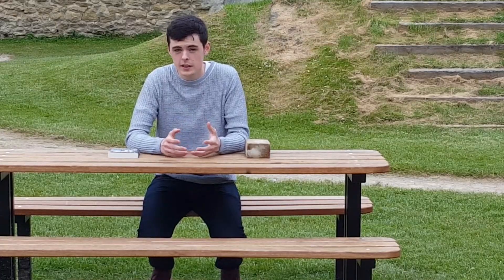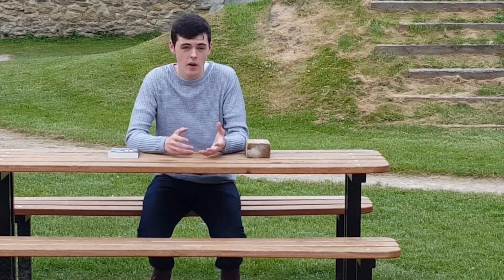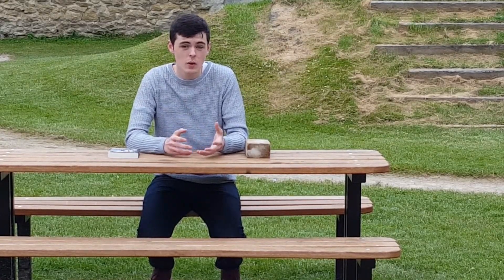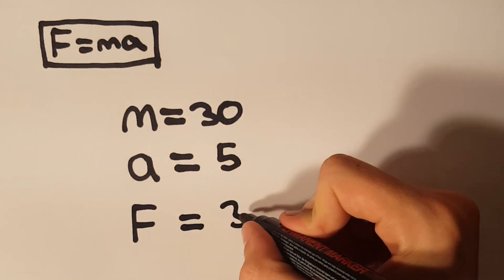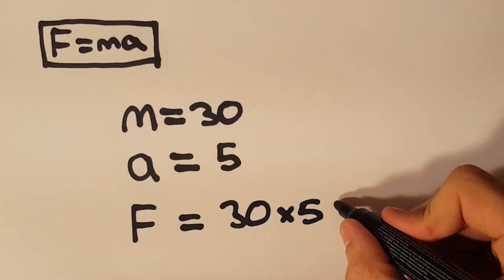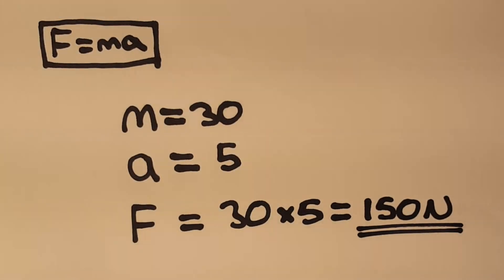For example, if an object has a mass of 30 kilograms and it's accelerating at 5 meters per second squared, then we know that the force applied to the object must be 30 times 5, which is 150 Newtons.